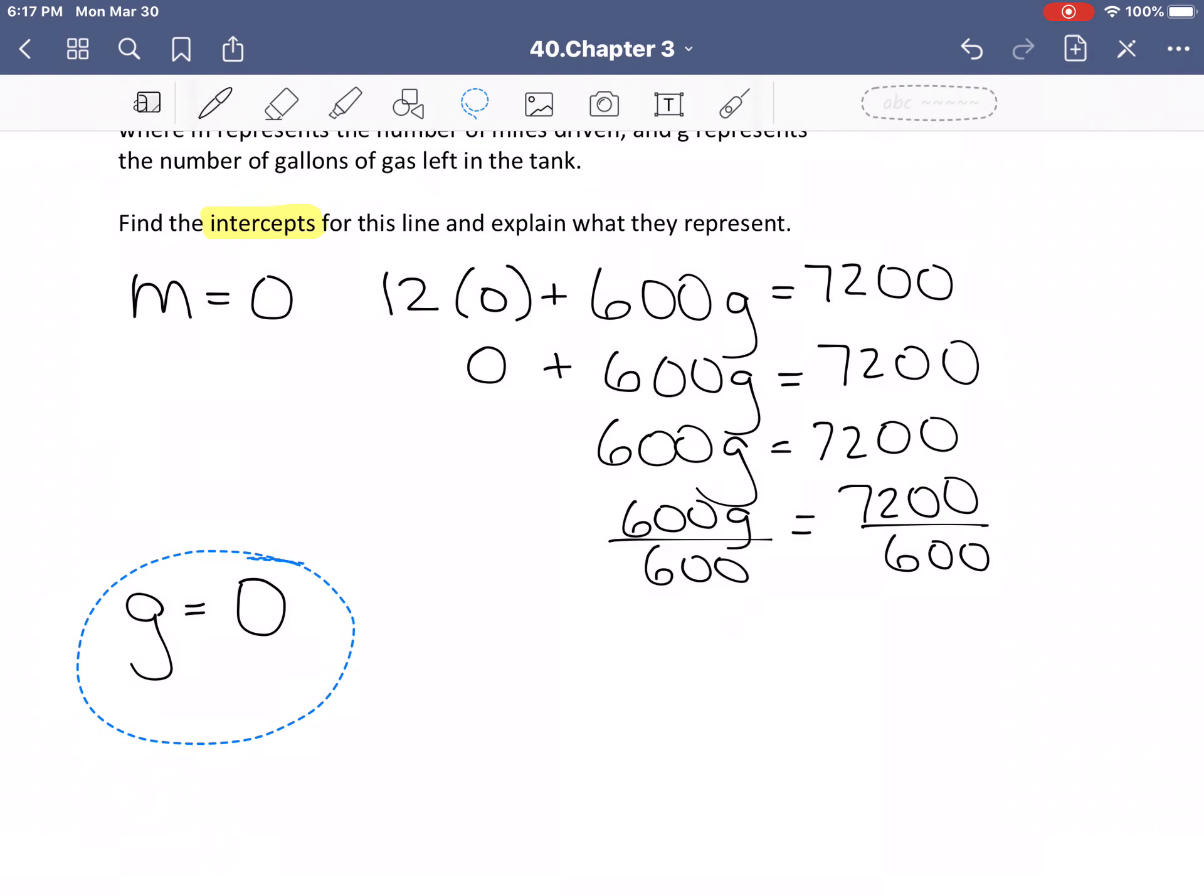I'm going to tuck this g equals zero down even further, maybe even have to put that on the next page. And then I get g equals 12.